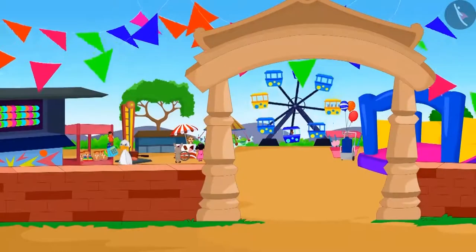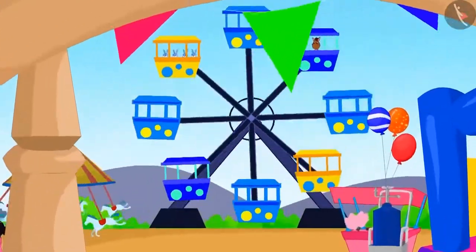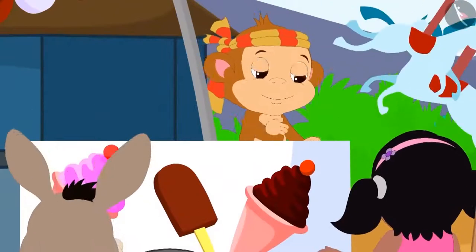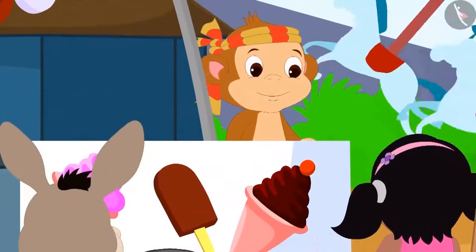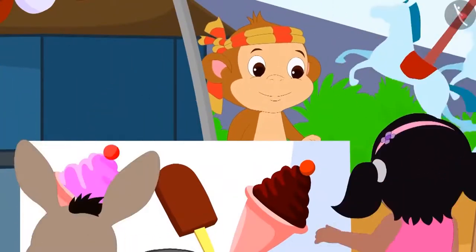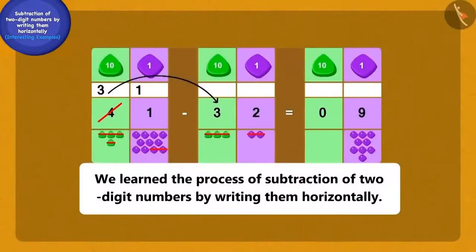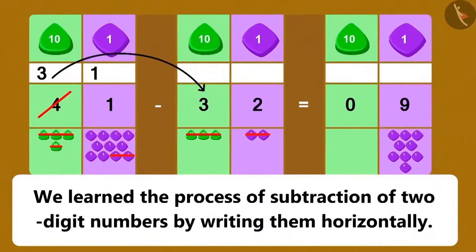Raju and Bablu kept wandering in the fair and solving the questions of subtraction. Children, you should also find such questions of subtraction around you and try to solve them. Children, in this lesson, we have seen some interesting examples of subtraction by writing two-digit numbers horizontally.